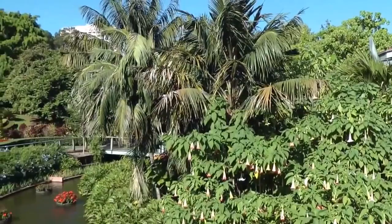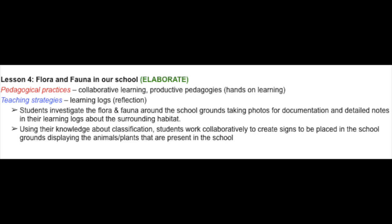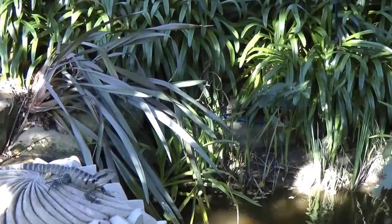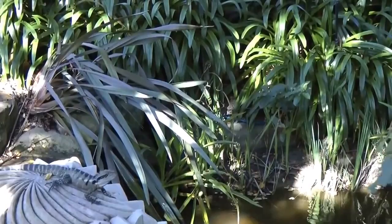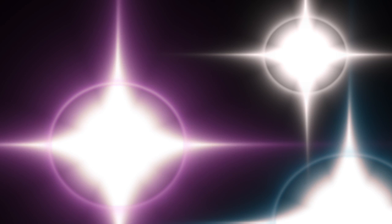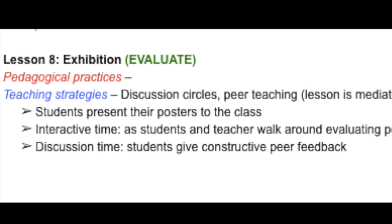Lesson 4, the Elaborate stage, gets students prepared for the excursion by exploring the school grounds for flora and fauna to create science around the school community. Lesson 5 is where the boys take a trip to Roma Street Parklands across the road to investigate the organisms that inhabit the local environment and document their learning through scientific learning logs. Lessons 6 and 7 involve the students completing their summative assessment piece, where they create an information poster including the data they collected as justification.